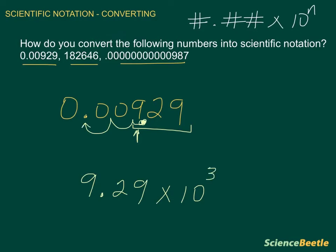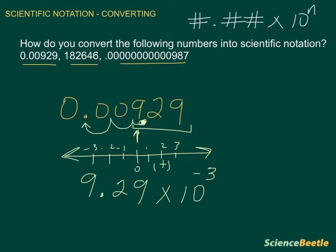Since it is moving in the left direction, we notice from the number line that if numbers move to the right, they're positive — 1, 2, 3. But if you move to the left, you have negative numbers: negative 1, negative 2, negative 3. Since the direction we're going here is to the left, this exponent is going to be minus 3. So this first number converts to 9.29 × 10^-3.